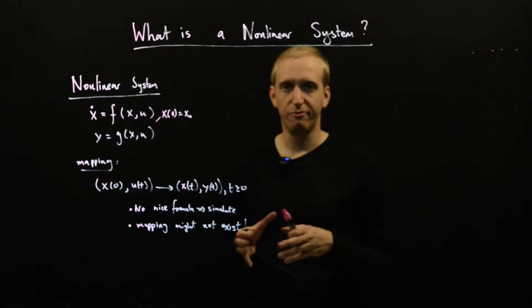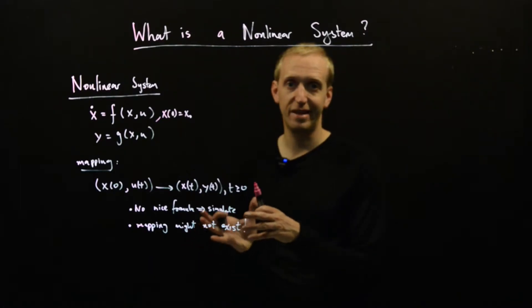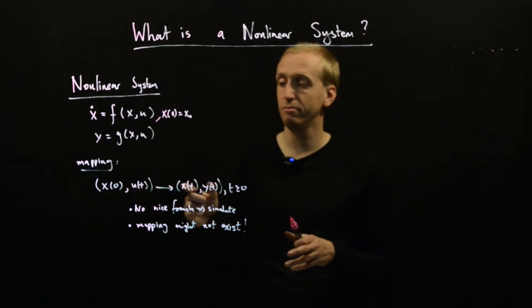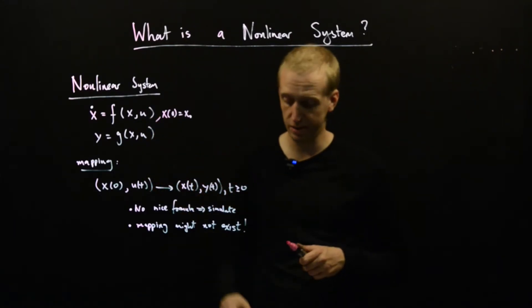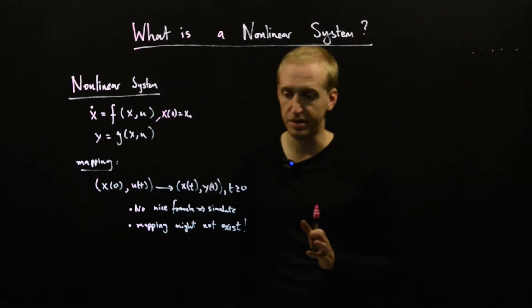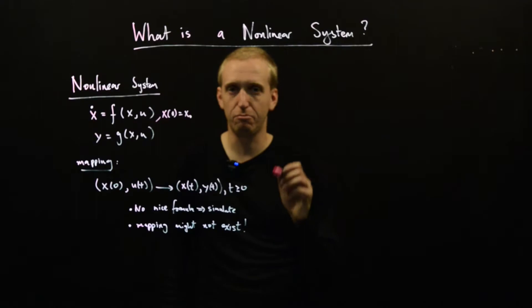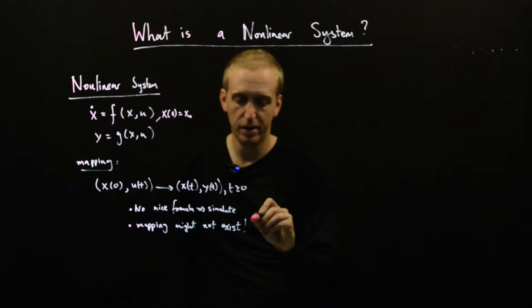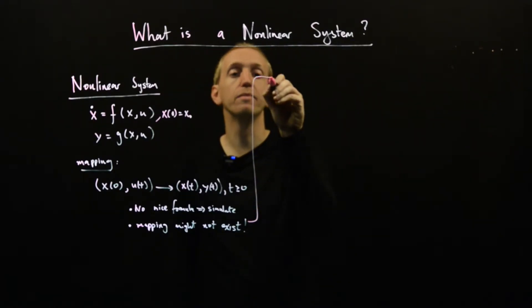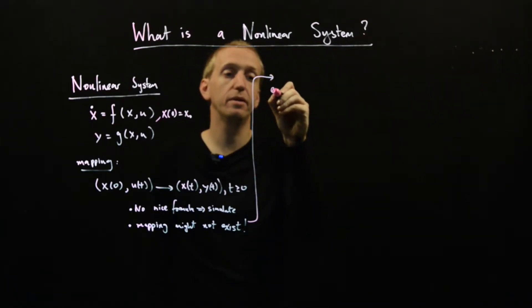So we're not really going to focus on them very much in this course. It's important to know that there might be problems that mean your model, if you write it down in this form, might not be able to make any predictions into the future. But if you write down anything sensible, this will never be a problem. Nevertheless, maybe it's interesting to see what types of things can go wrong.